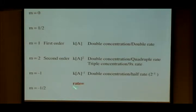All right, so also there is no name that I'm aware of for when m equals minus 1 half. But we can write the rate law. So that's just going to be k times the concentration of A raised to the minus 1 half.